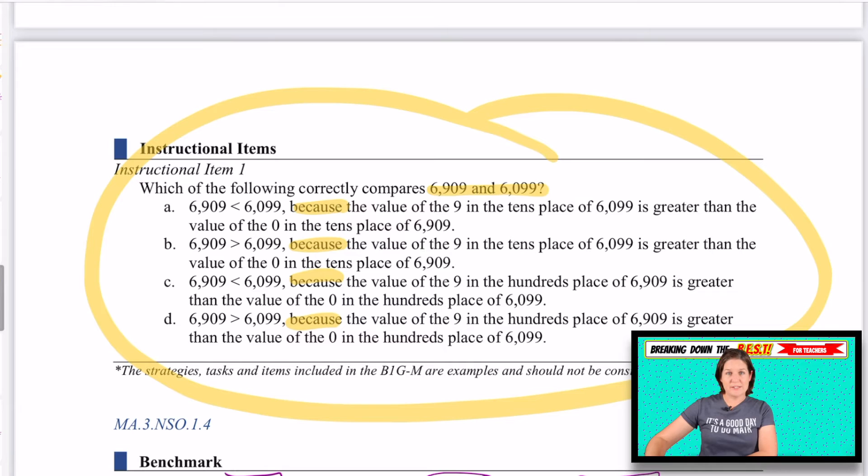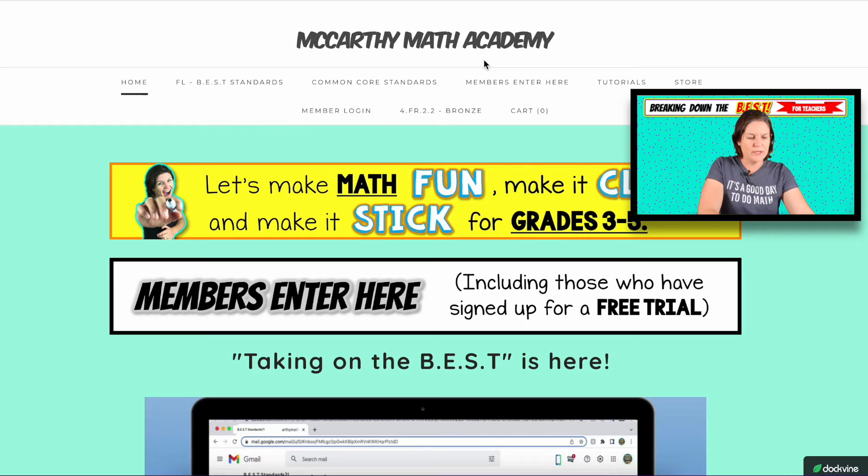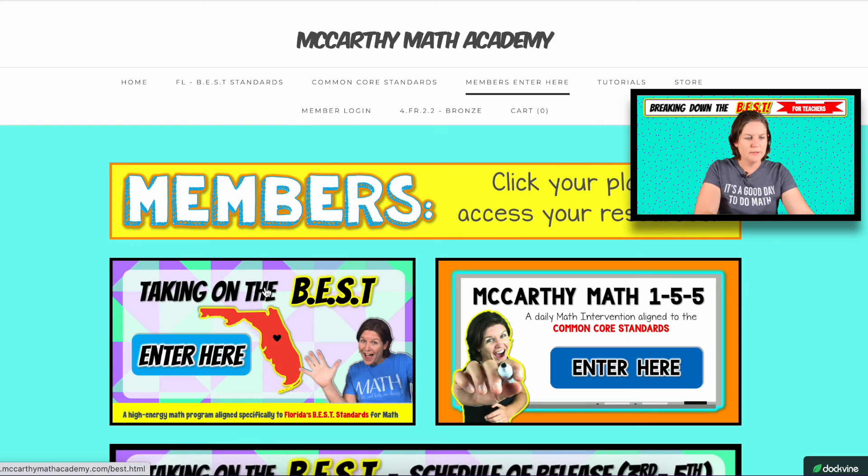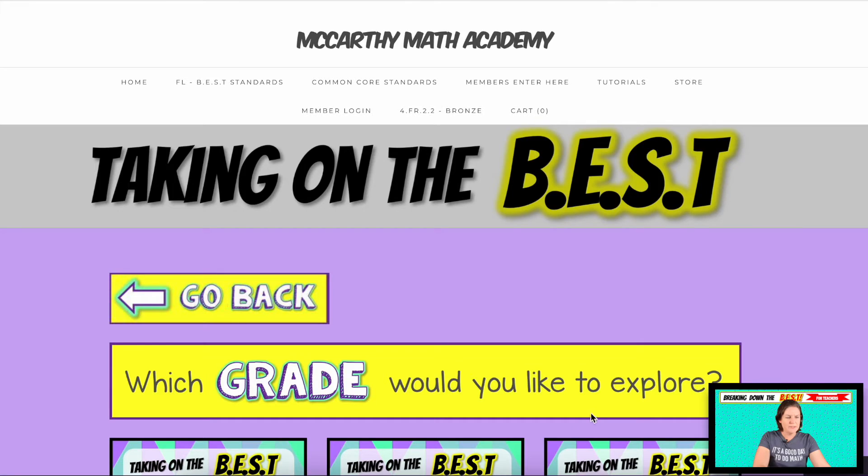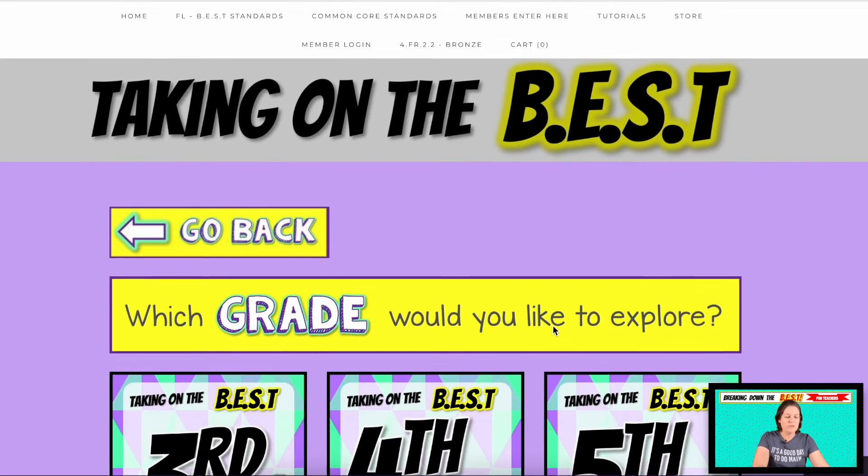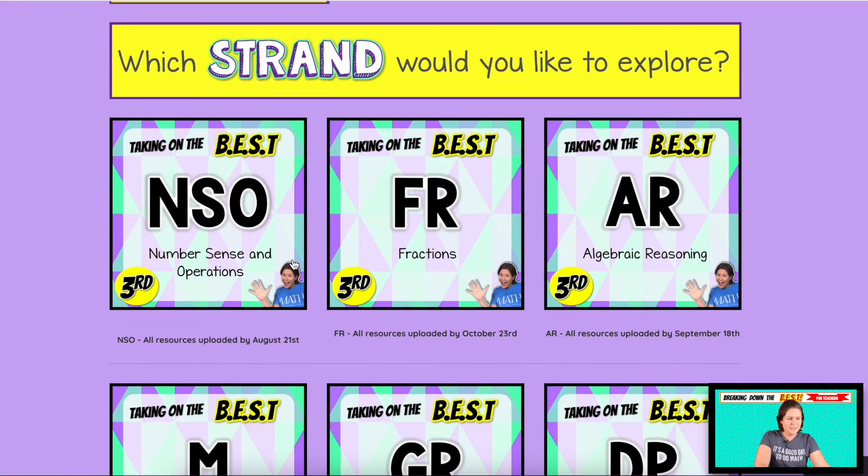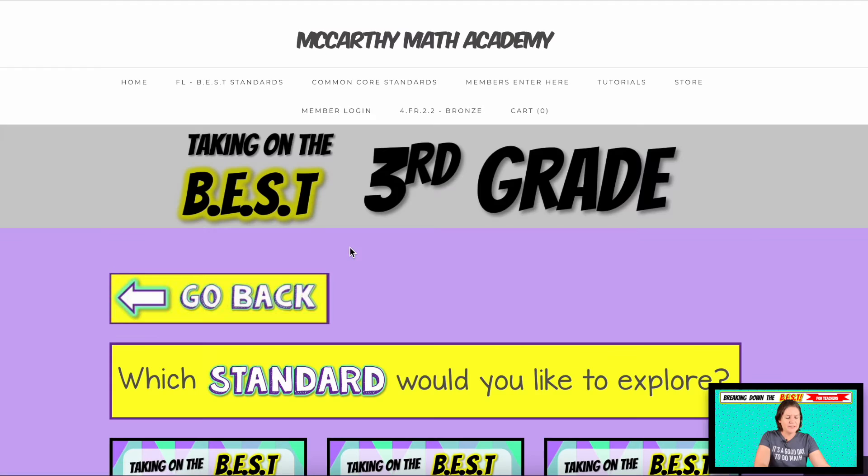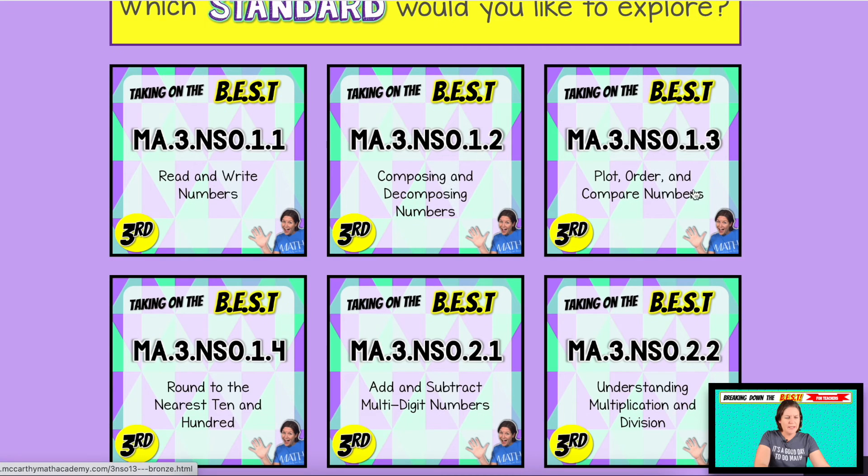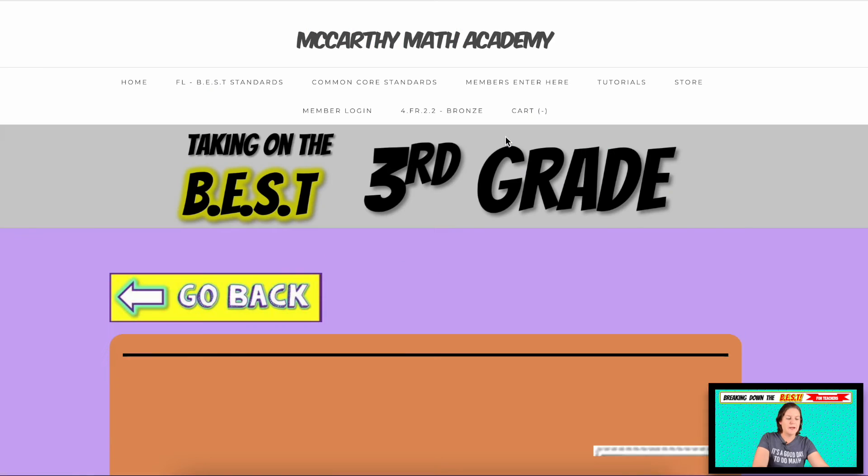Now that we've gone over the best standard, let's take a look at what you've got for your resources and your membership. So here we go. Let's members enter here. Taken on the best. Which grade third grade, which strand we are in NSO strand. And today we're working on NSO 1.3, which is plotting and ordering numbers.